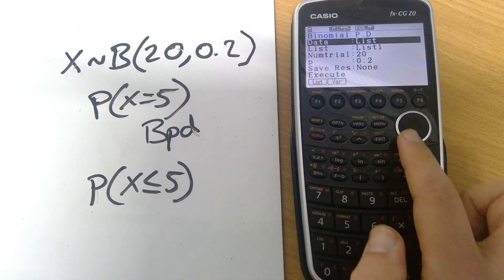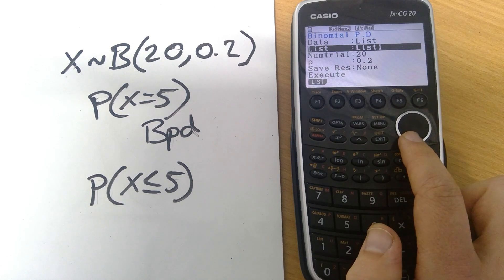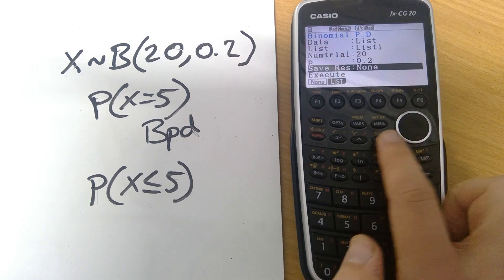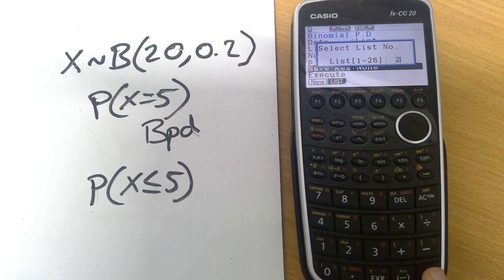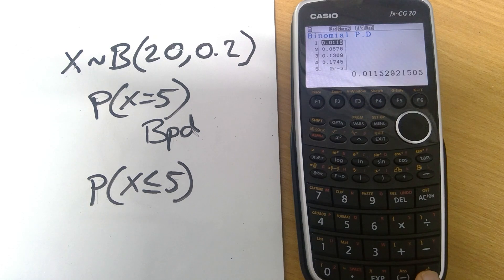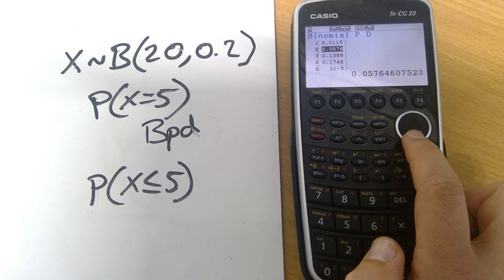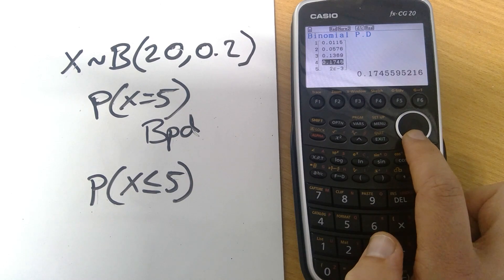We're doing the probability distribution and we now know that it's going to be taking the values from list 1. It's going to be doing lots of calculations. I'm probably going to want all of those answers. So I'm going to go down and ask it to save the results into list number 2 and pressing execute. And there are all of those calculations and of course we can scroll through and see them in more detail which is very useful.